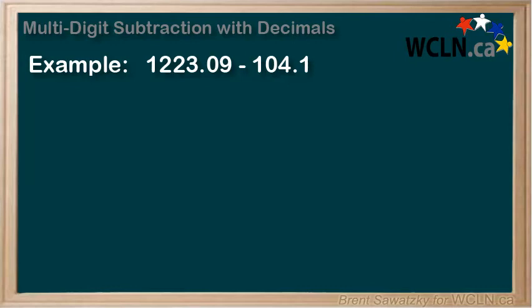In this tutorial, we'll look at a multi-digit subtraction example involving decimals: 1223.09 minus 104.1.